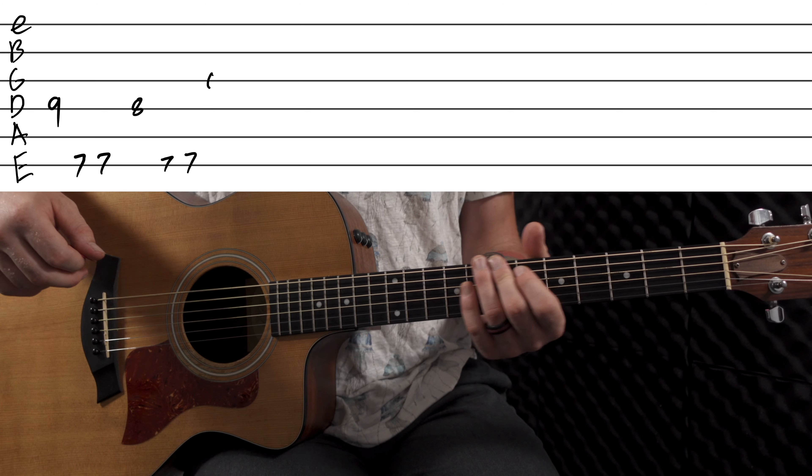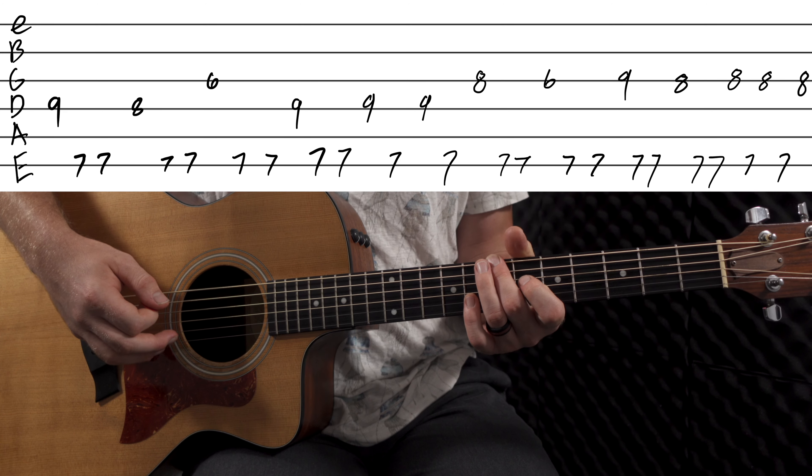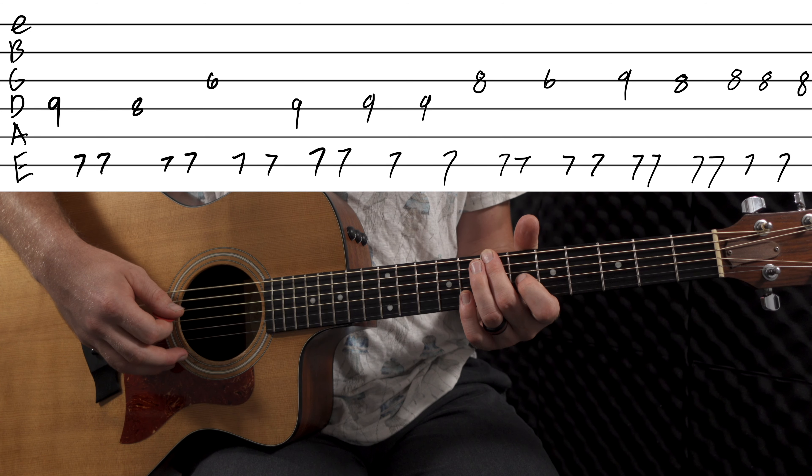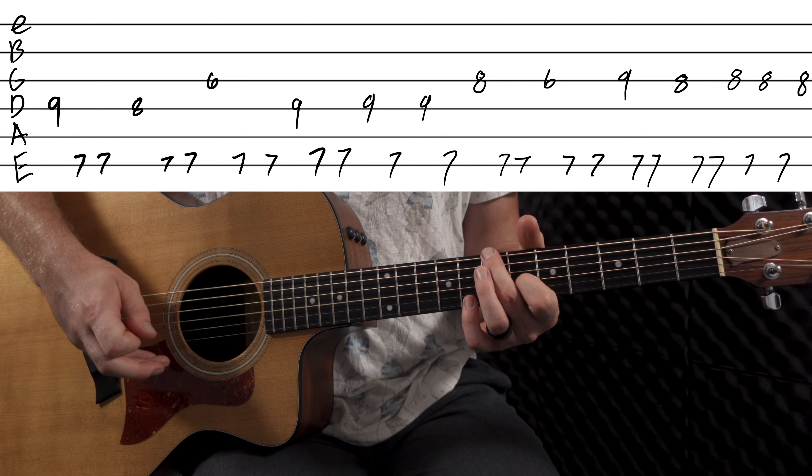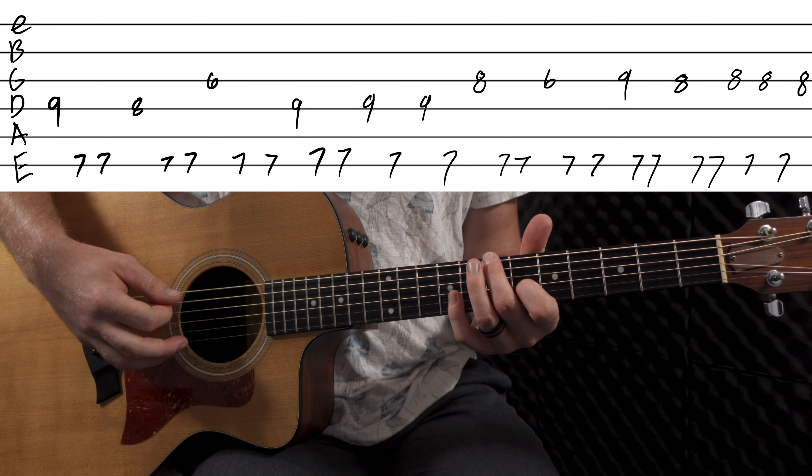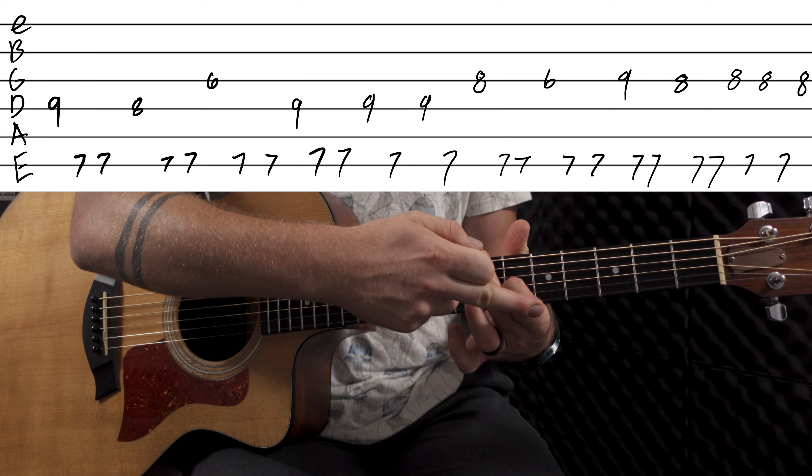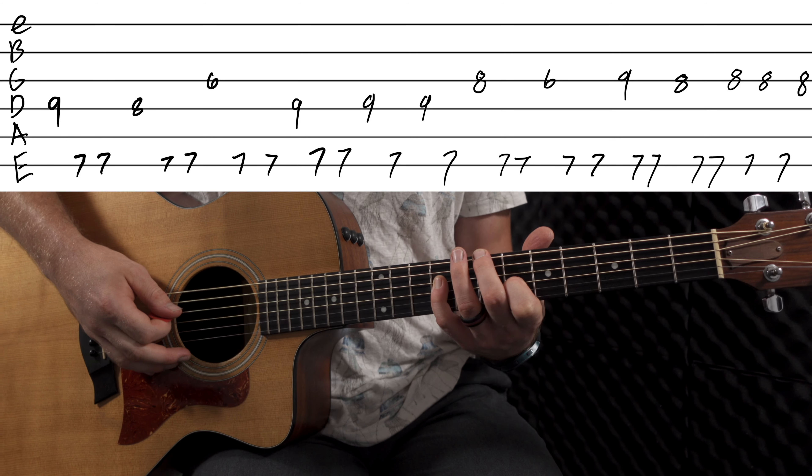Anyways, to start us off, the intro starts off on the 7th fret E string. We're going to have our root notes set up first. So it'll be 7th fret E string, and then 6th fret G string. These two notes you want to keep the same. I use my middle finger and my pointer finger.